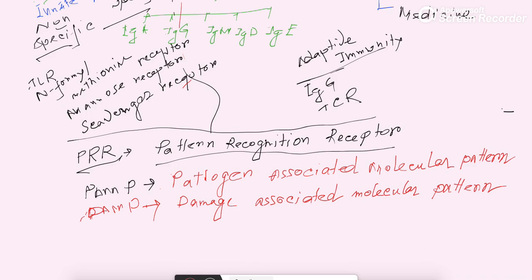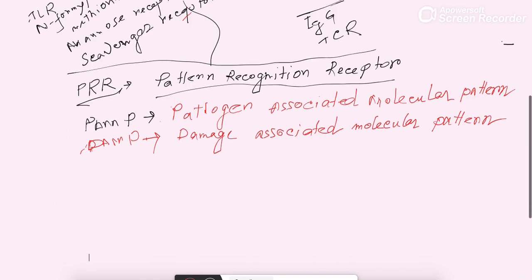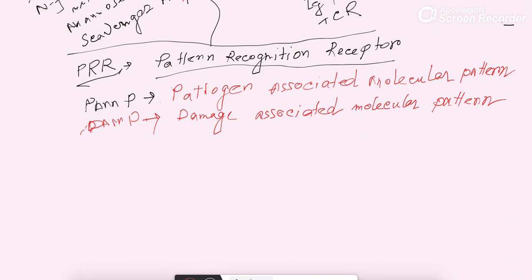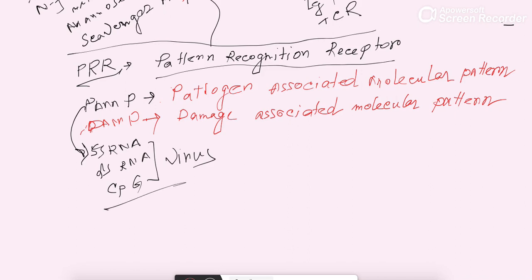Now we want to discuss what PAMPs are. PAMPs are microbial substances that stimulate innate immunity. Examples include ssRNA, dsRNA, and CpG — all found from viruses — which are examples of PAMPs. Not only nucleic acids, but proteins like pilin protein and flagellin protein, found from bacteria, are also examples of PAMPs, because they are not molecules found in our body.